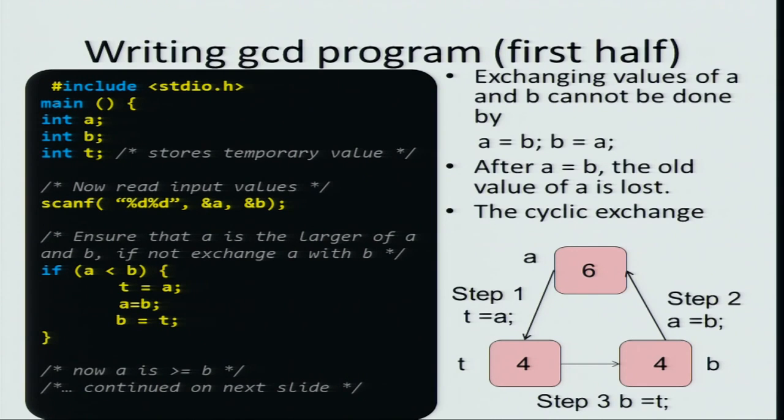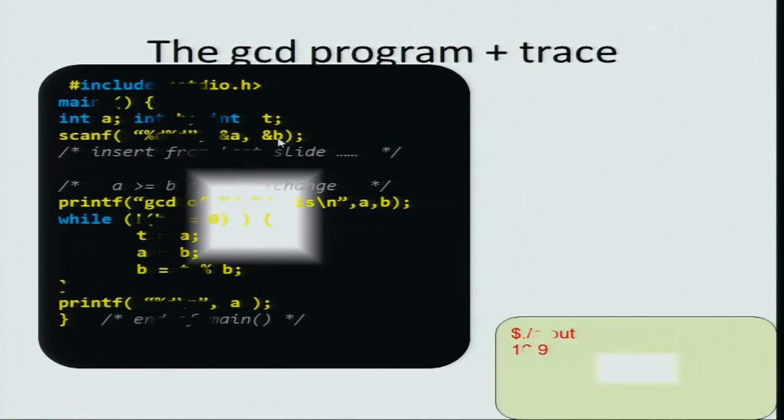Recall the physical intuition of swapping the contents of two almost-full rooms: you use a third temporary room, move the contents of the first room to the third, move the contents of the second to the first, and move the contents of the third to the second. In the case of physical contents we cannot copy, but in the case of variables we can copy. Now let us complete the GCD program. The first part ensures that a is actually the greater number — if it was not, you swap or exchange. After the exchange, we have ensured that a is greater than or equal to b.